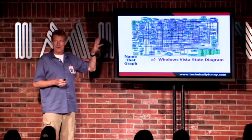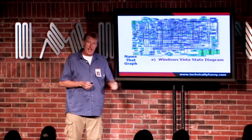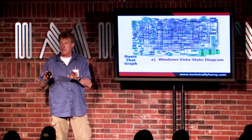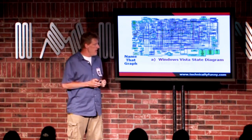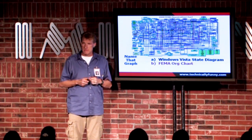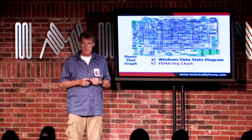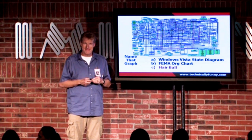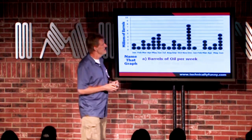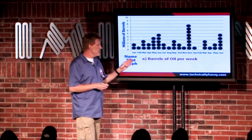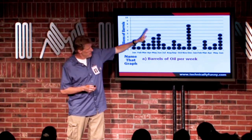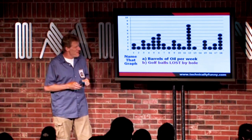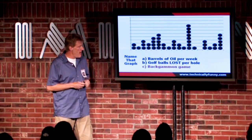This is an actual diagram — I swear. This is a Windows Vista state diagram, which explains a lot. Or is it B, the FEMA org chart? Or is it C, a hairball? It's a hairball, actually. This is a good one: barrels of oil per week. Or is it B, golf balls lost per hole? Or is it C, a backgammon game.